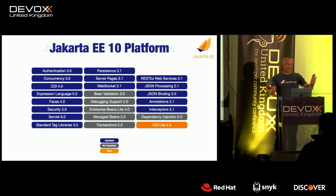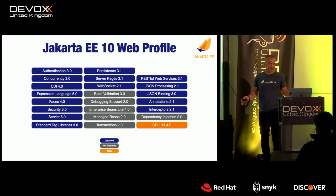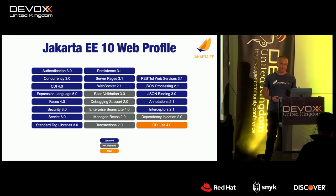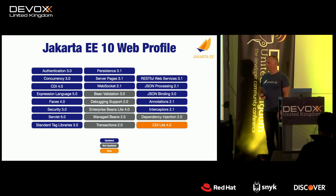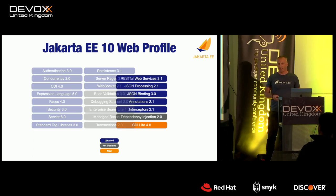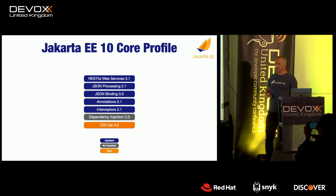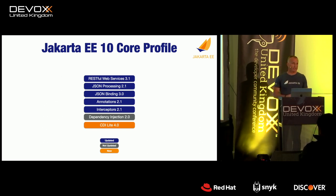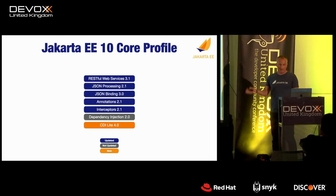If we scrape away the more enterprise-y specifications, we're left with a set of specifications targeting more traditional web applications — that's the Jakarta EE10 Web Profile, which has been with us since Java EE 6. And if we take away the traditional webby things, we're left with a stack suitable for microservices, headless services, or RESTful endpoints. These are the new Jakarta EE10 Core Profile — brand new in EE10, the first new profile since Java EE 6.